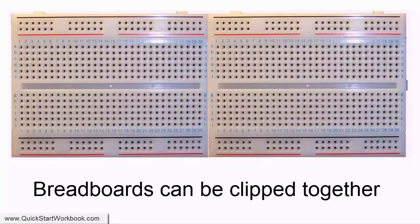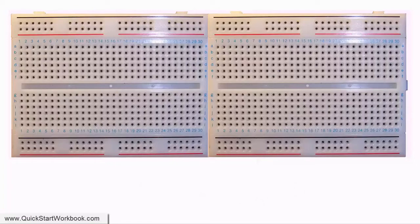Breadboards have little tabs on two edges and slots on the other two edges. This enables you to clip breadboards together to make a bigger one.